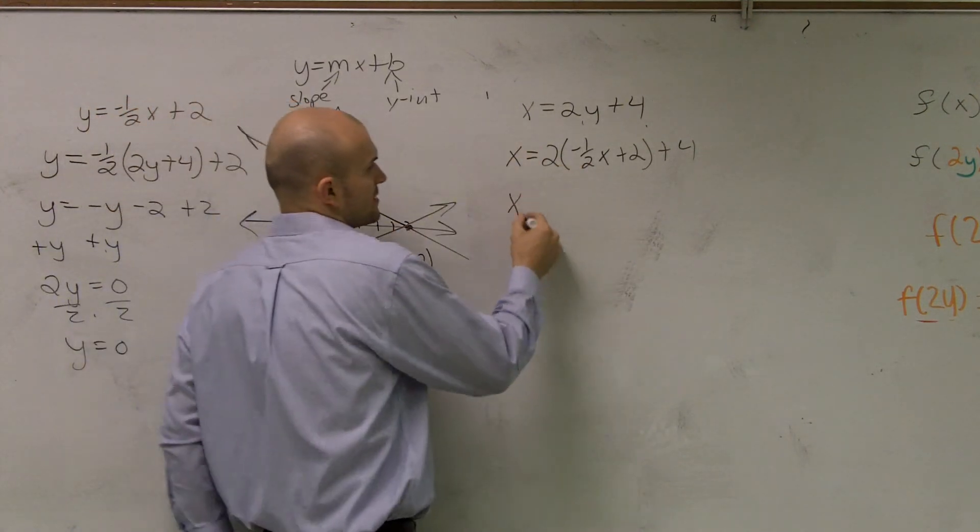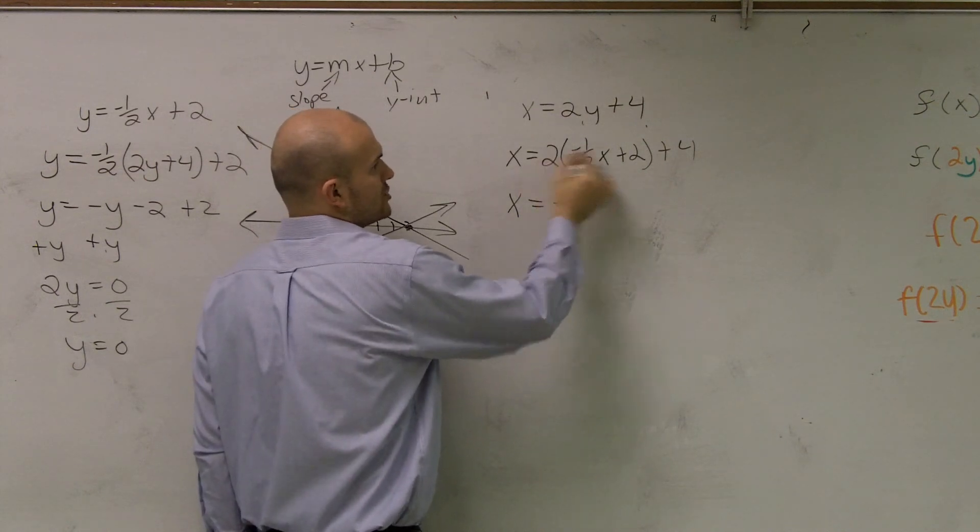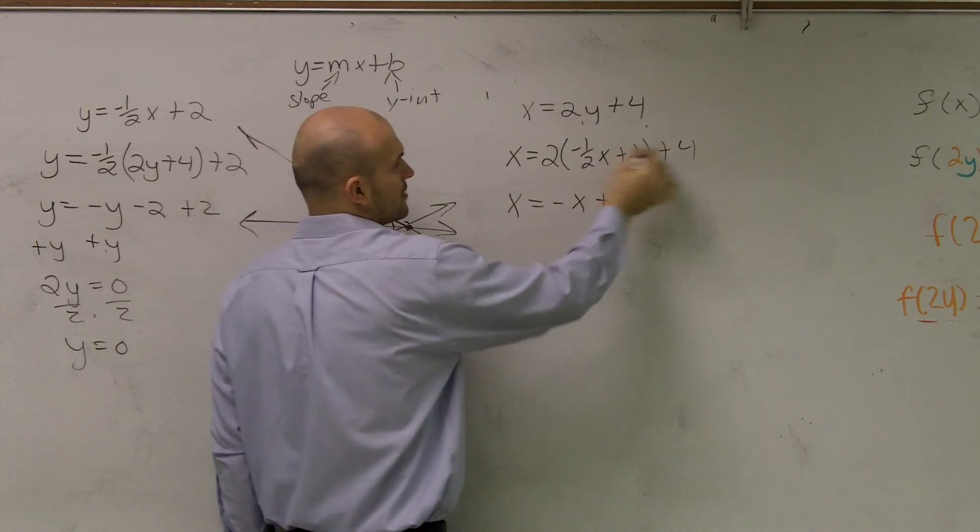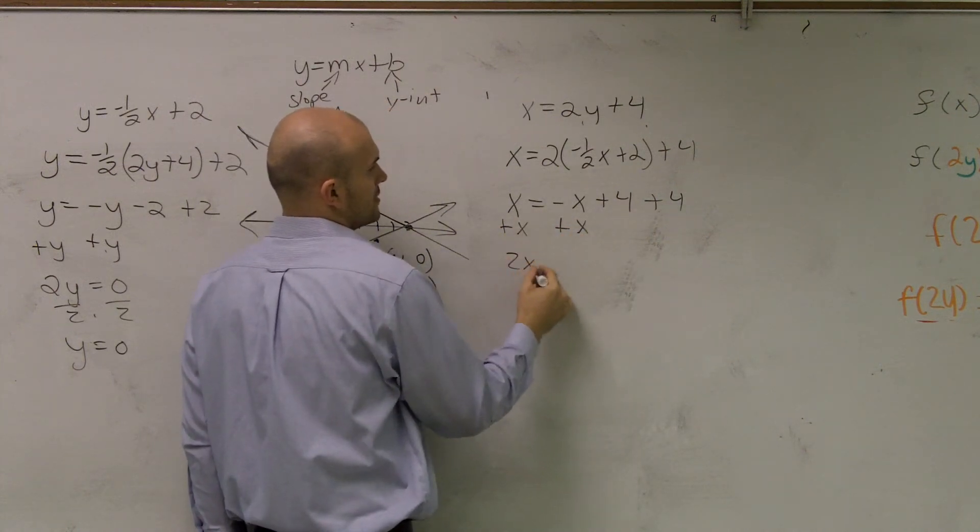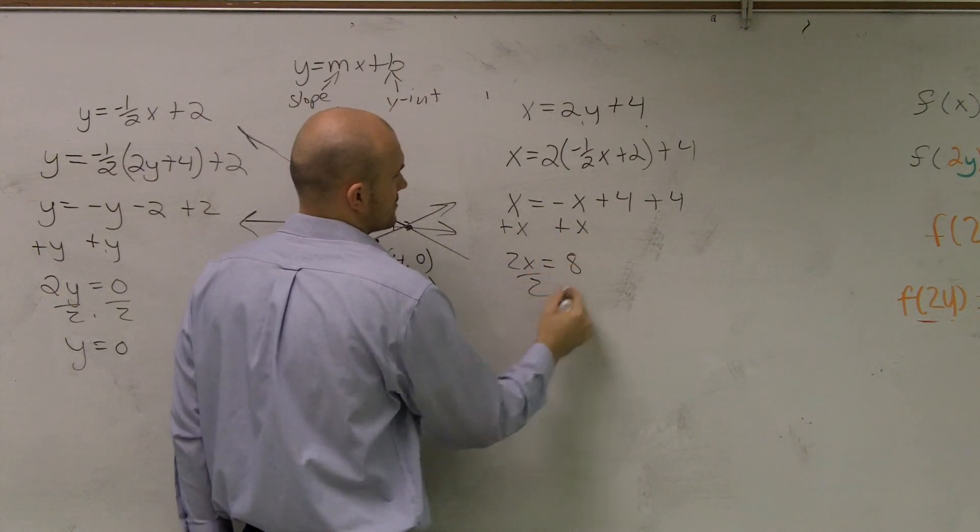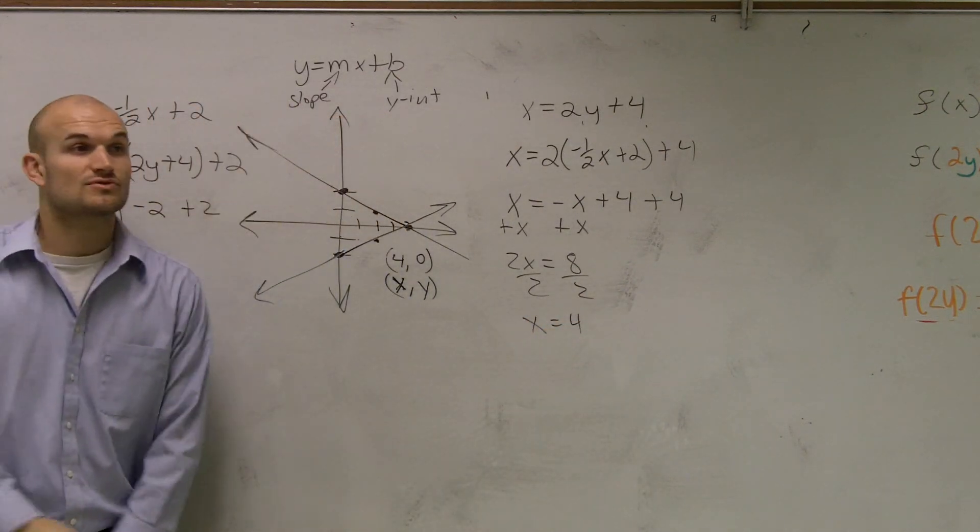Let's check this one for x. 2 times negative 1/2 is going to be a negative x. 2 times 2 is going to be a positive 4 plus 4. Get the x on the other side. 2x equals 8. Divide by 2. x equals 4.